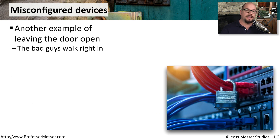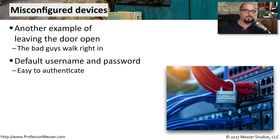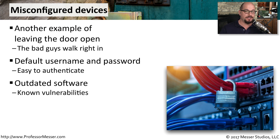We spoke earlier of leaving our digital doors open by not assigning the correct permissions, but you can also create the same type of open door by misconfiguring the devices on your network. For example, the routers and switches on your network have a default username and password. One of your first steps when installing these devices is to change both the username and password to something no one could easily guess. If you leave the defaults in place, it would be very easy for someone to authenticate and begin changing configurations. Another misconfiguration might be the use of outdated software, especially if that outdated software has known vulnerabilities that someone could use to gain access to the system without even using a username and password.